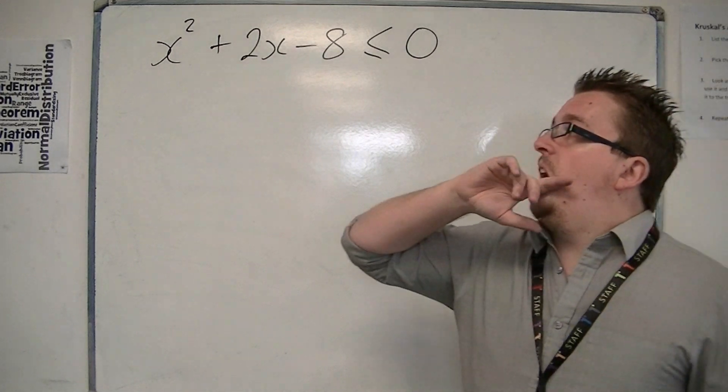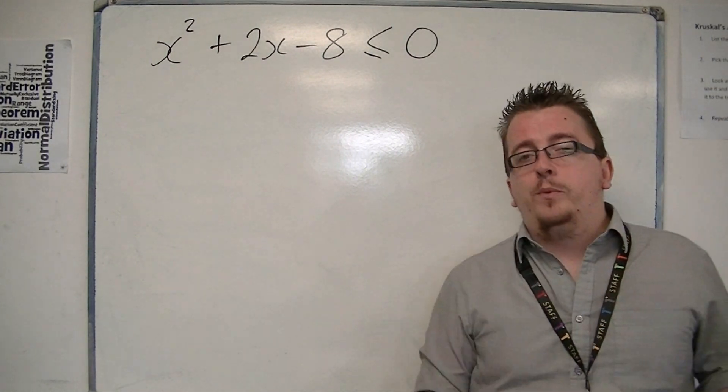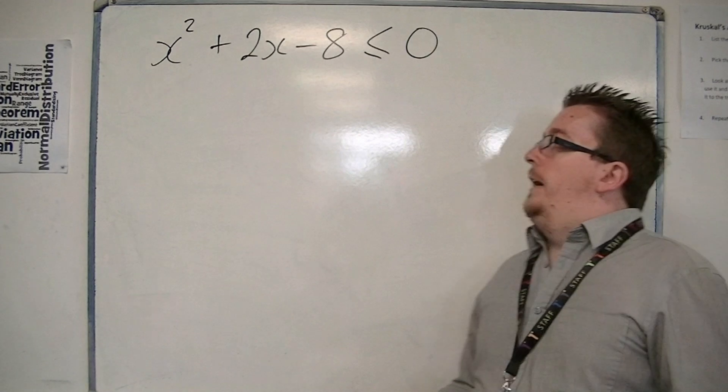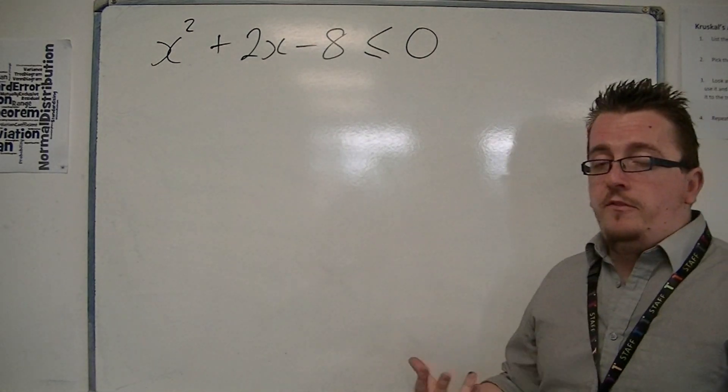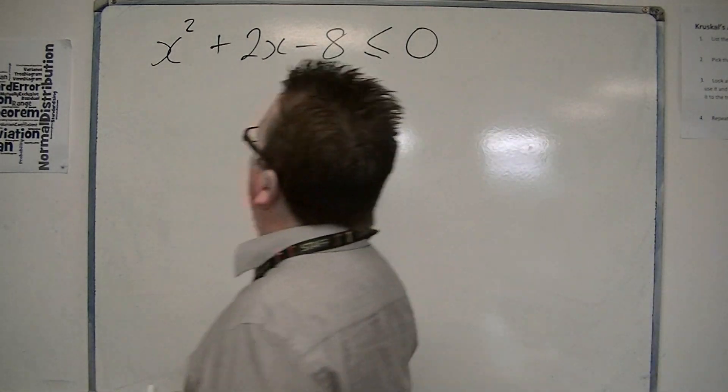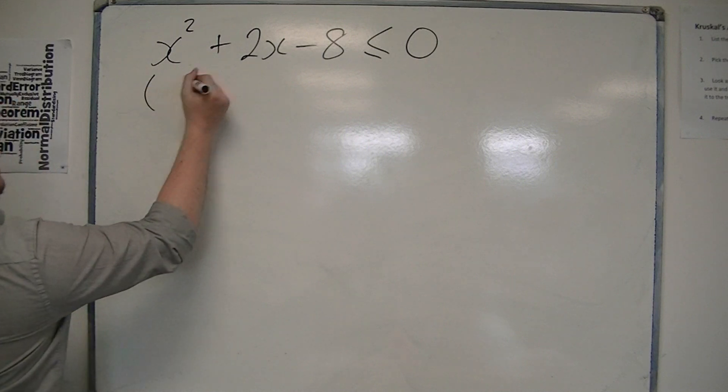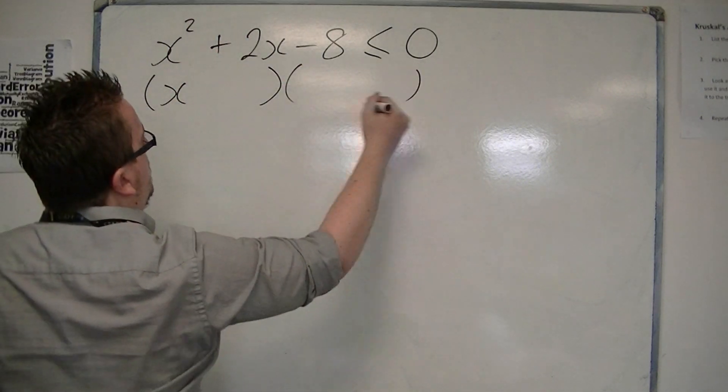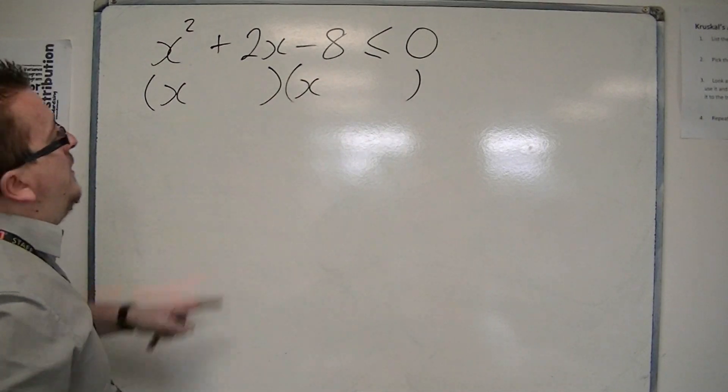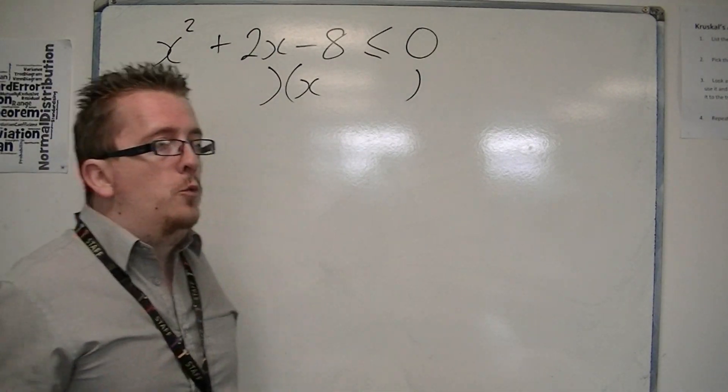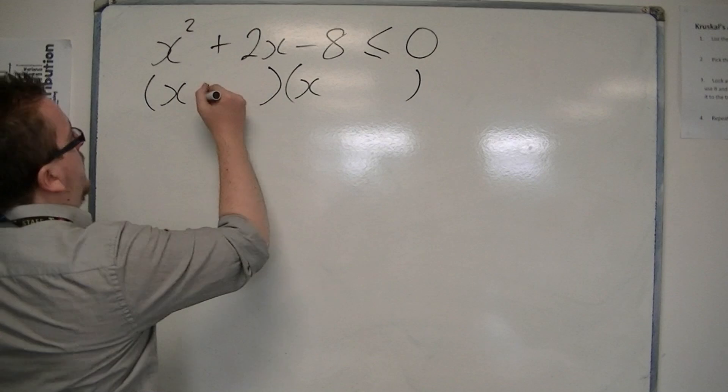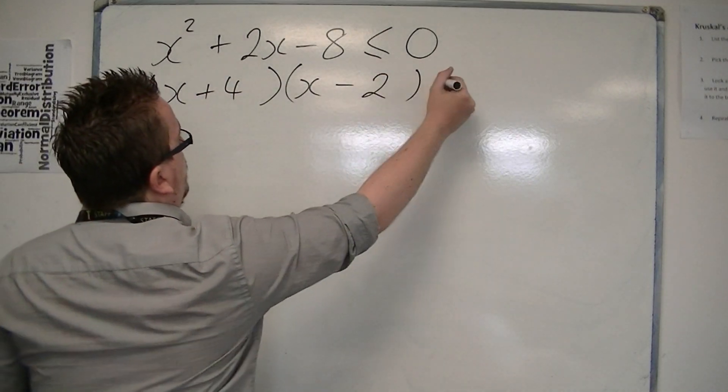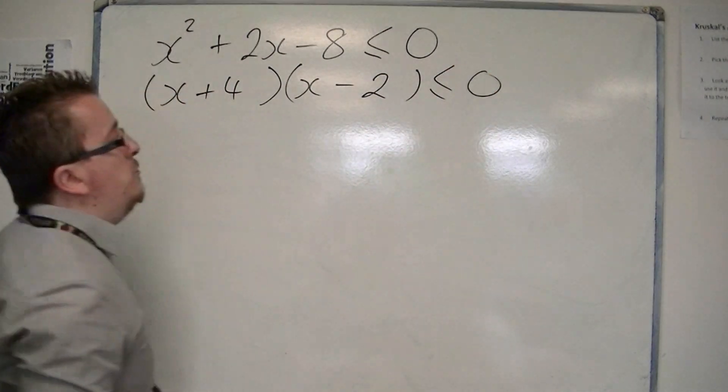Now, as I said in the previous video, we can factorise or we can use the quadratic formula. This one can be factorised. So we have two numbers that multiply together and make minus 8, but add together and make 2, would be 4 and minus 2. So we've got plus 4 and minus 2. This is less than or equal to 0.